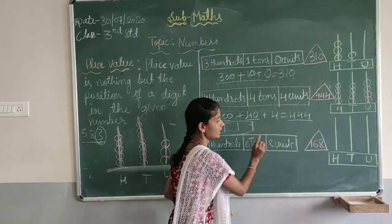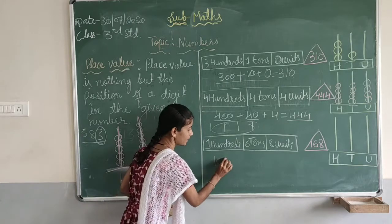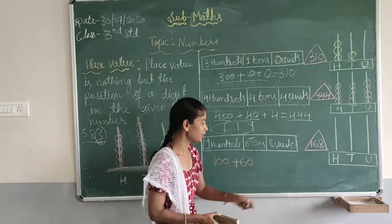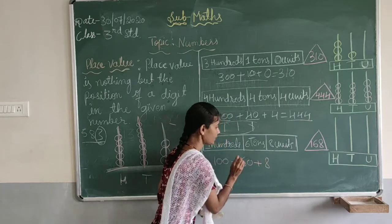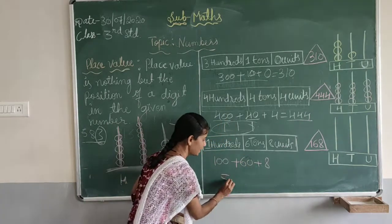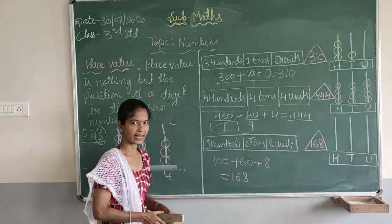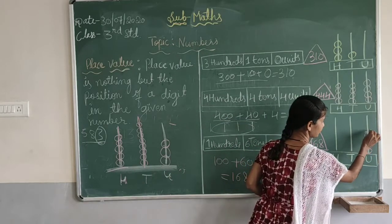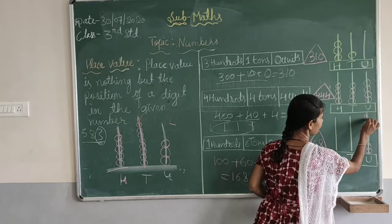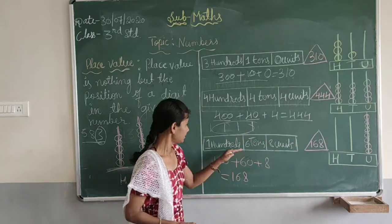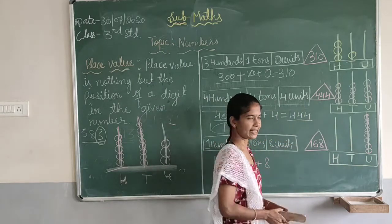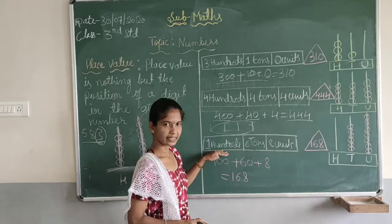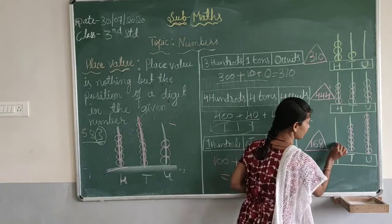Another example: 1 hundred, 6 tens, and 8 units. 100 plus 6 tens means 60, plus 8 units. So 100 plus 60 plus 8 equals 168. For the abacus: 8 units means 8 beads on the units rod — 1, 2, 3, 4, 5, 6, 7, 8. Then 6 tens means 6 beads on the tens rod — 1, 2, 3, 4, 5, 6. And 100 means only 1 bead on the 100's rod.